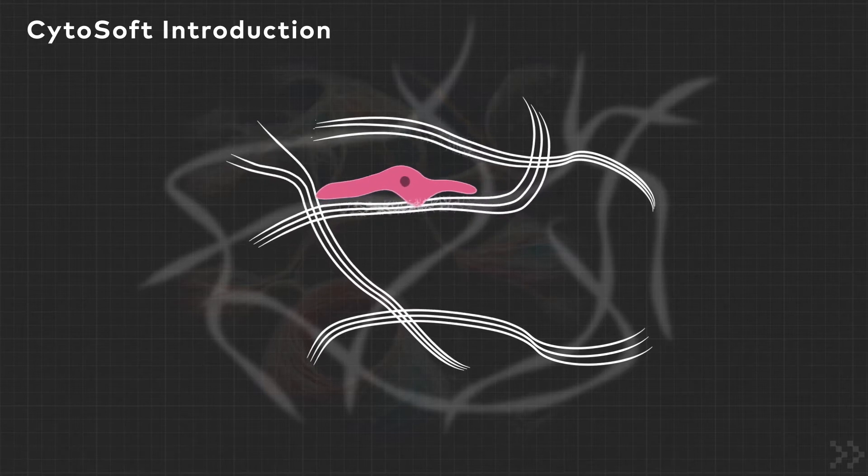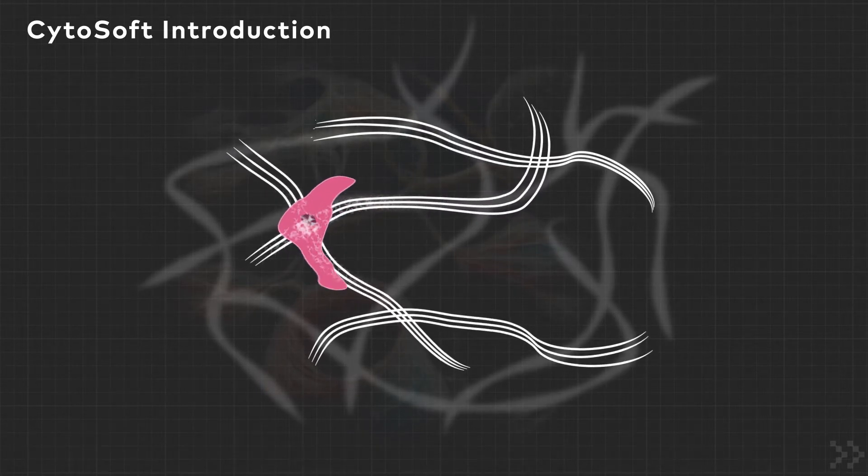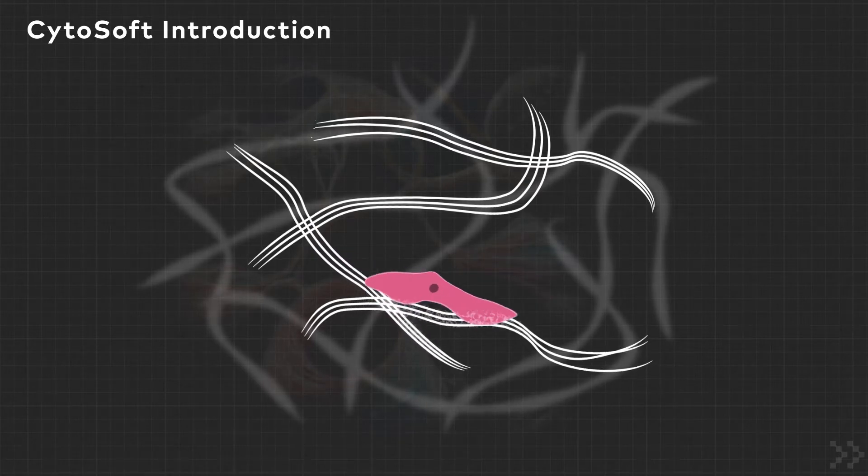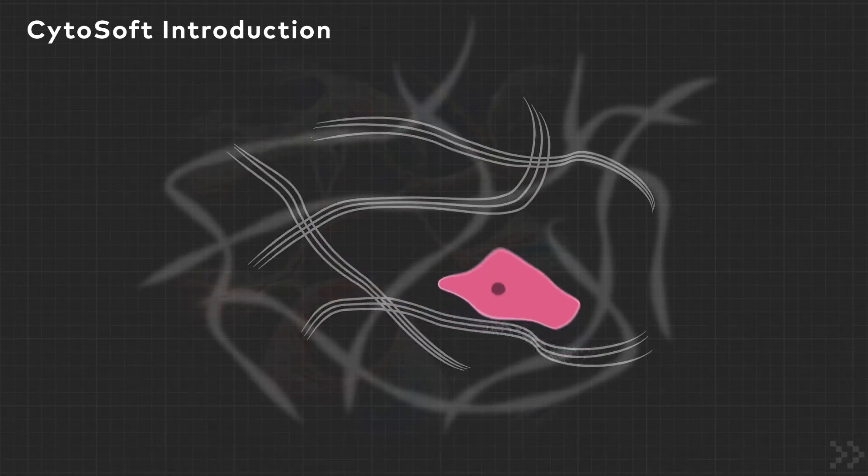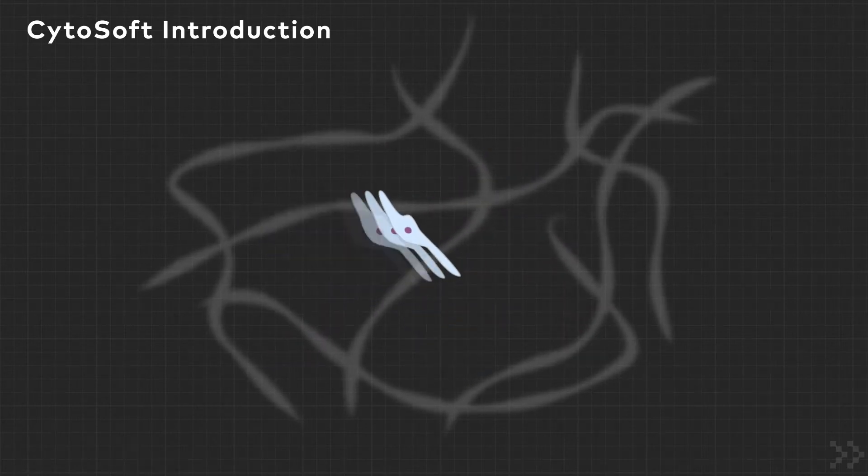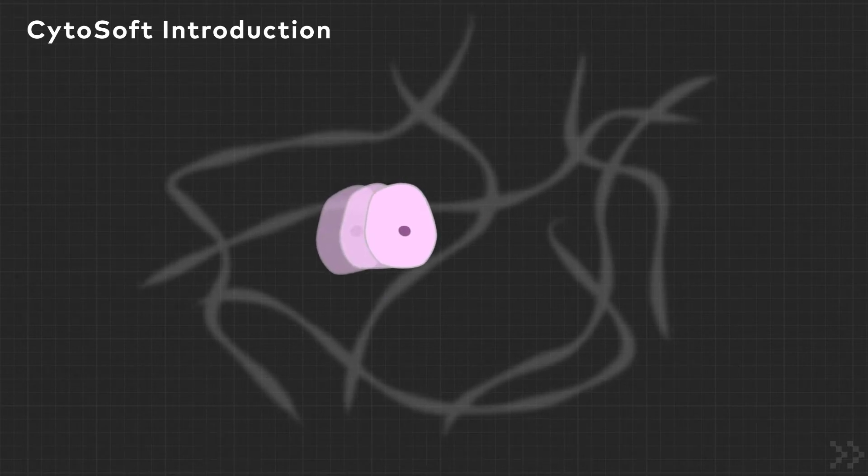Cells are able to sense and respond to mechanical stimuli in a process called mechanosensing. As a result, the stiffness of the substrate to which cells adhere can have a profound effect on cell proliferation, differentiation, lineage specification, gene expression, morphology, self-renewal, pluripotency, and migration.